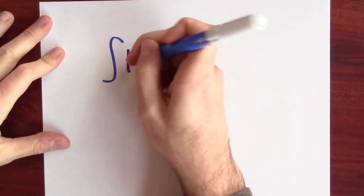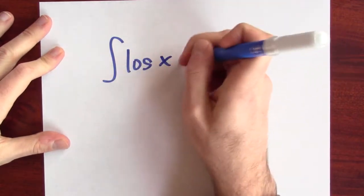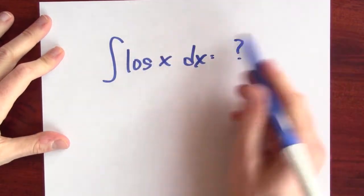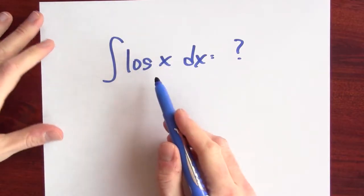Great, we found an anti-derivative for e to the x. What about an anti-derivative for log? In symbols, what I'm looking for is an anti-derivative of the natural log of x, some function that differentiates to the natural log of x.